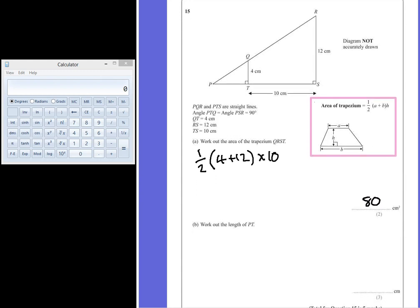Part B is a little bit trickier. It asks us to work out the length of PT, so the length of this smaller triangle on the left. Now because all the angles are the same, both triangles share this angle, they're both right angle triangles, they're both similar.